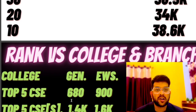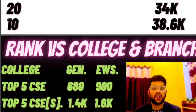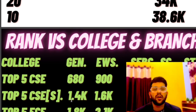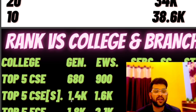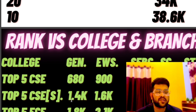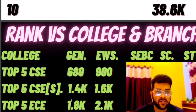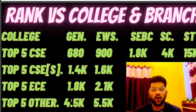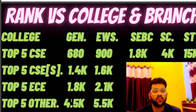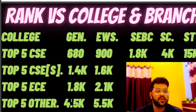Now for rank versus college — very important data for ACPC counseling. For top 5 colleges with CSC branch: General requires rank 680, EWS 900, SEBC 1,800, SC 4,000, and ST up to 15,000.